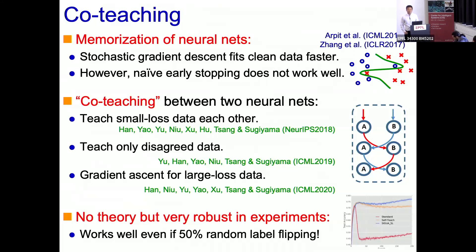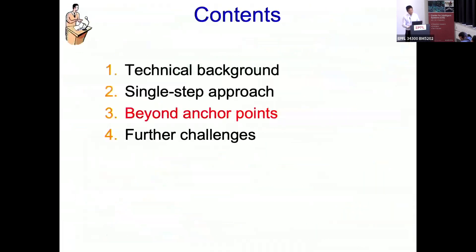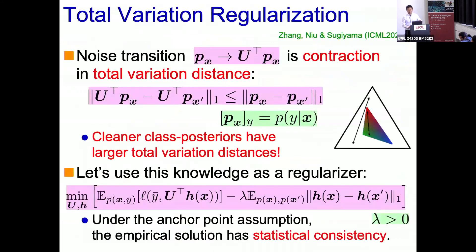Q: Are there PAC results for the case where the training distribution is perturbed and you want finite sample guarantees based on some distance between distributions? A: In this framework it's a standard empirical risk minimization type analysis and we didn't really consider perturbation explicitly. But the first part does have such guarantees in the paper — I didn't show the convergence result here. It's a finite-sample bound with a skeletal convergence guarantee.